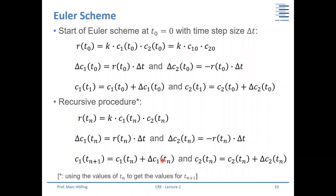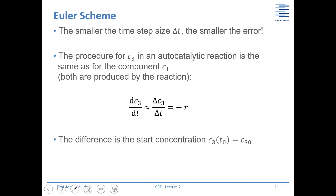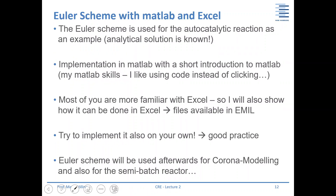In general, the smaller the time step size Δt, the smaller the error. If the time step is too large, you will end up with nonsensical numbers — concentrations like 10 to the power of 200. The procedure for C3 in the autocatalytic reaction is the same as for C1: ΔC3/Δt = +R. The only difference is that you use C3_0 as the starting concentration instead of C1_0, but it is very straightforward.